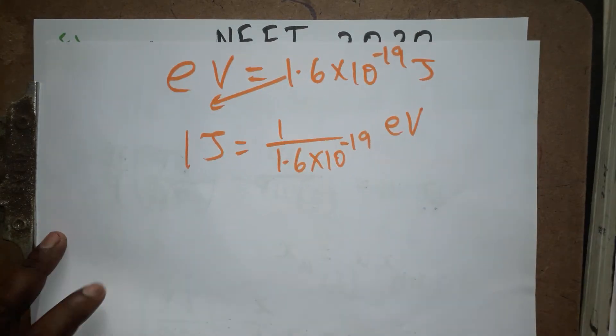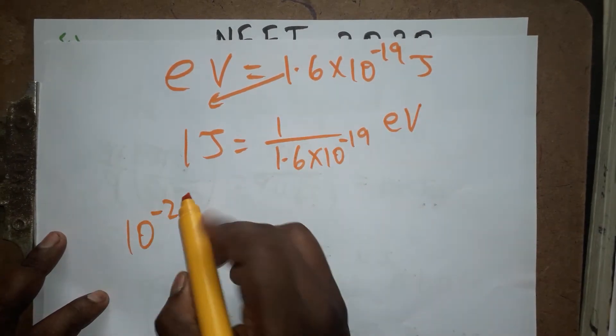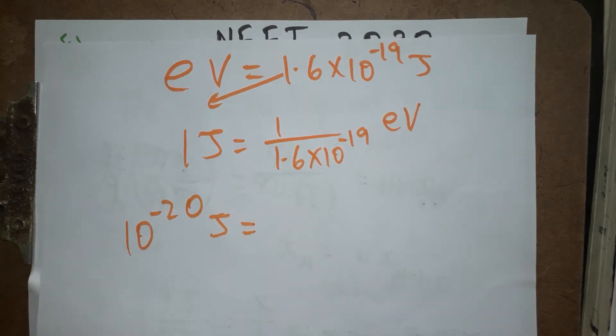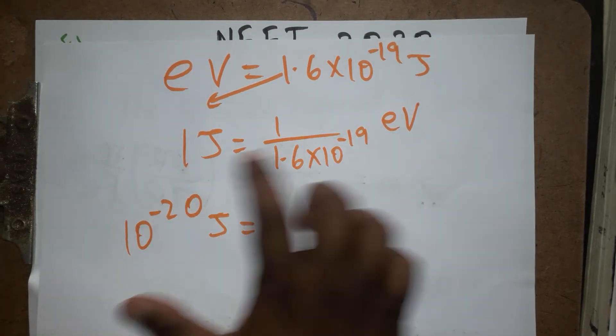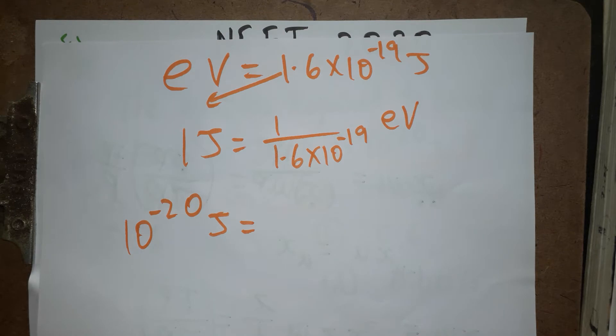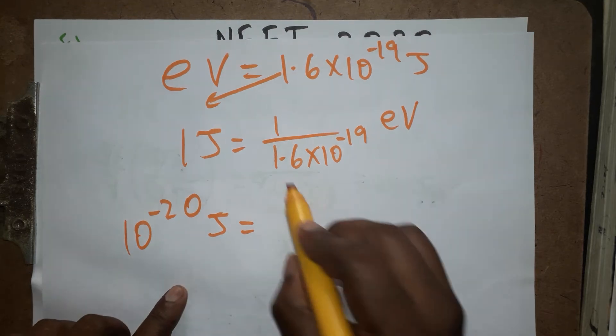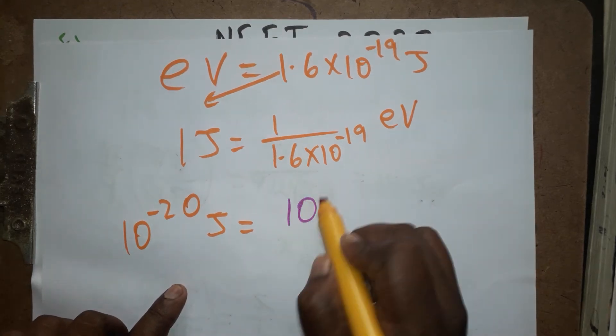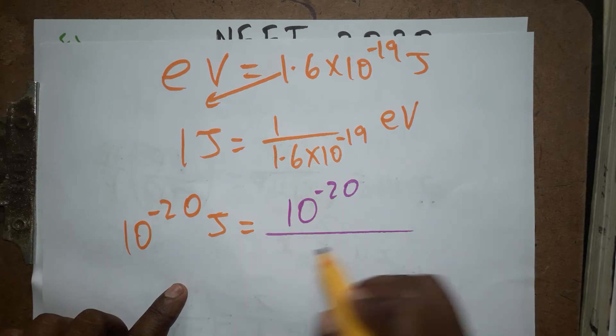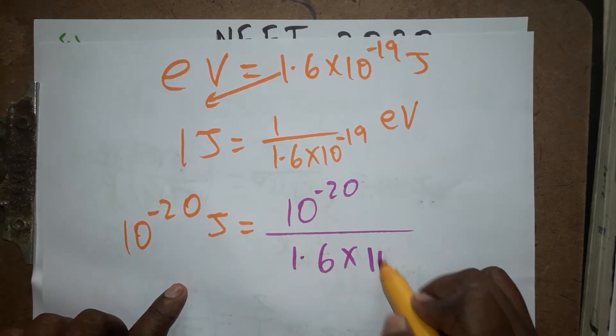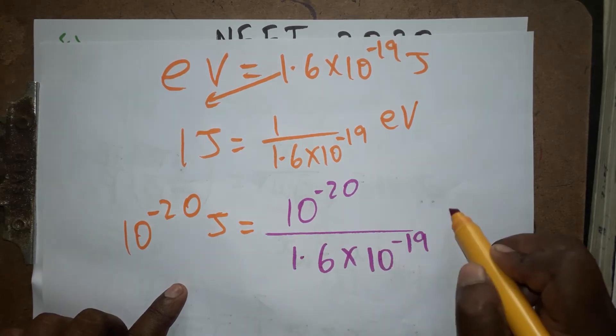Now we have 10^-20 joules equals how many eV? One joule equals this many eV, so just multiply directly. 10^-20 divided by 1.6 × 10^-19 joules.